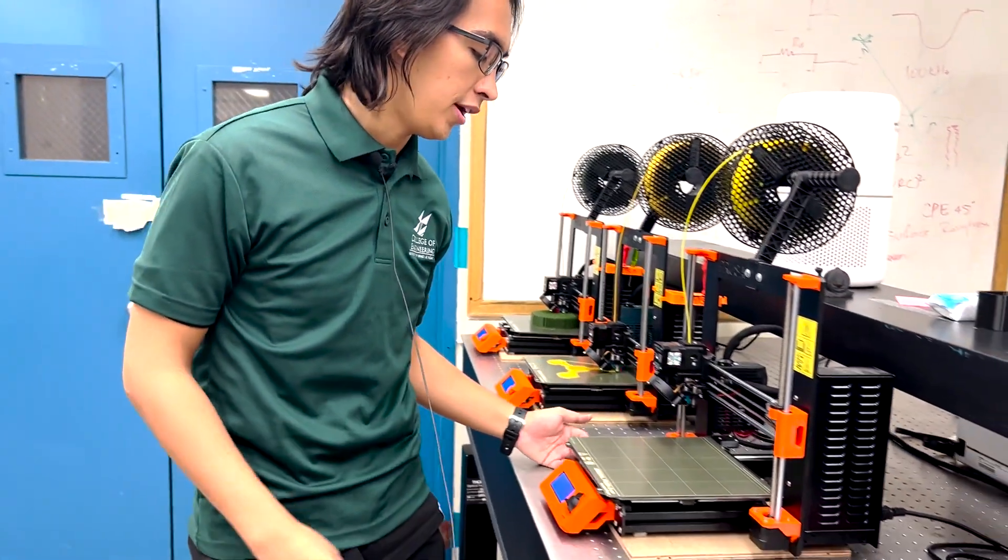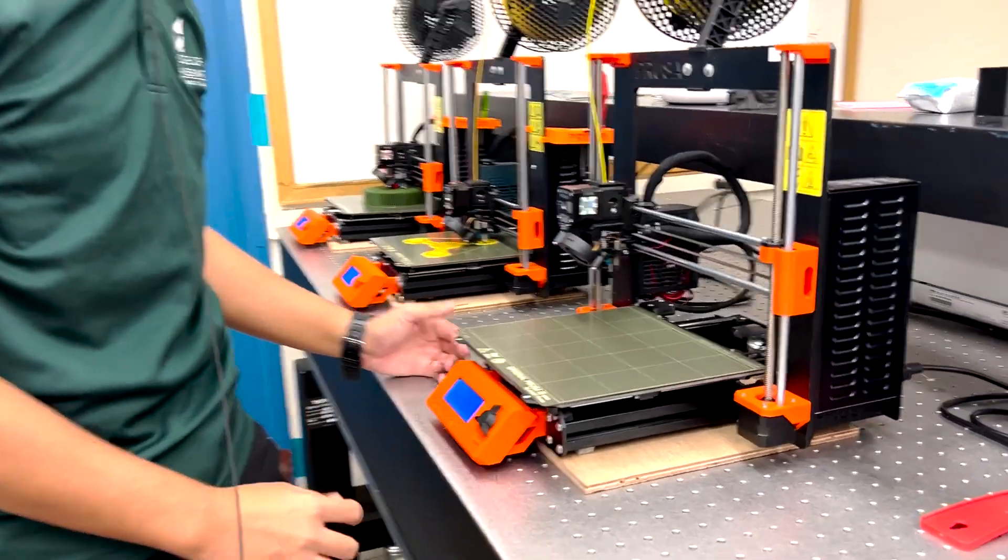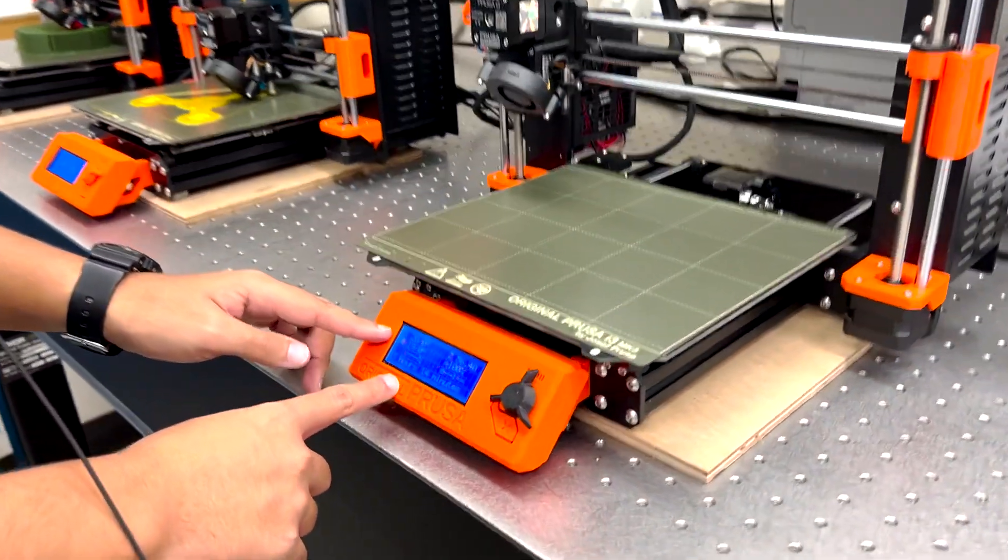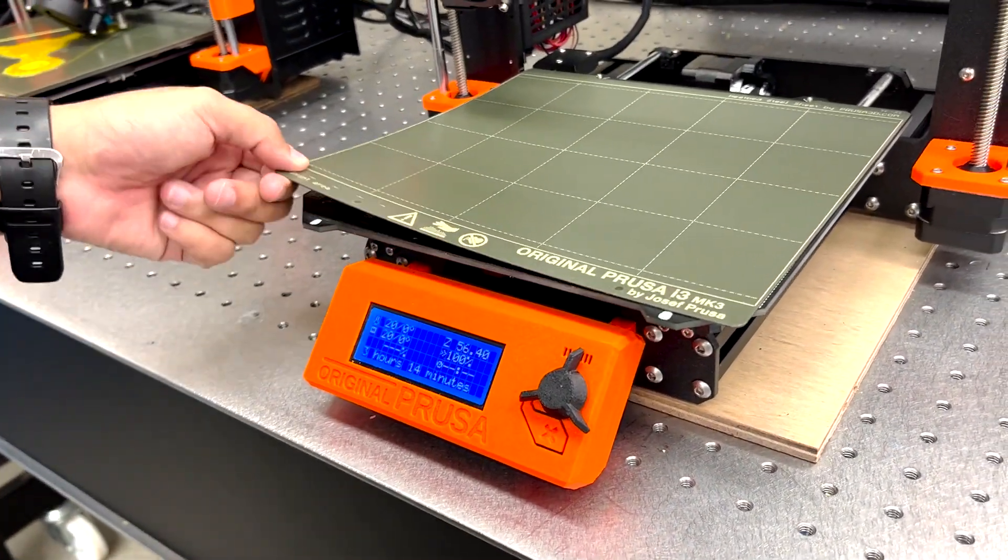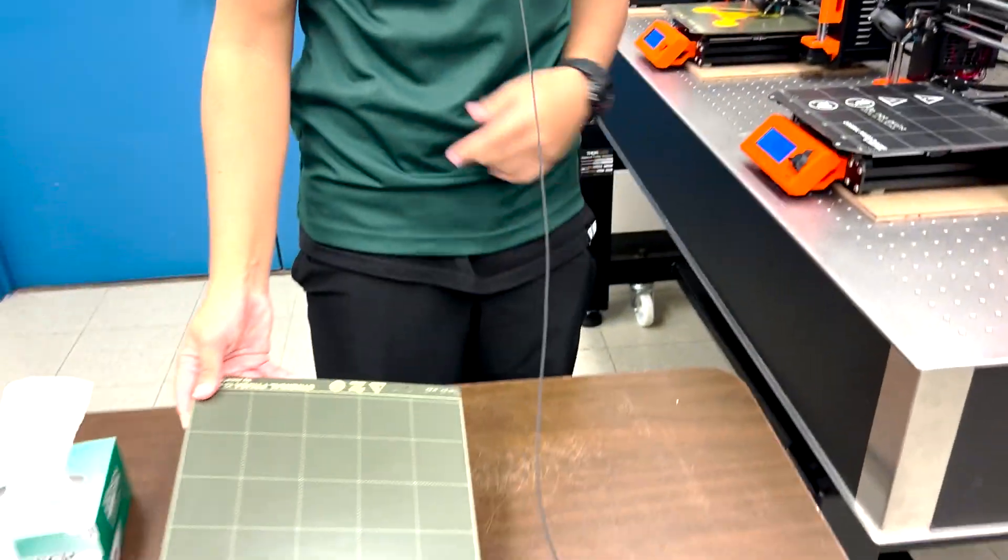First, you want to grab the build plate off of the printer. Make sure it's not hot by checking the display screen. Grab the build plate and place it on any table.